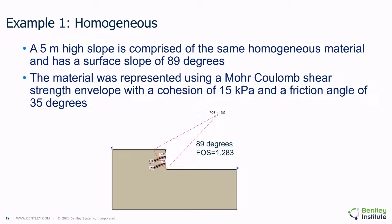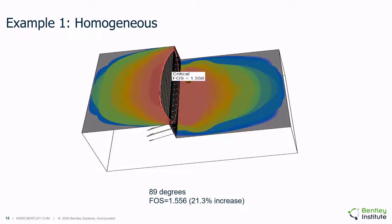This example is a homogeneous slope of 5 meters high, analyzed in 2D and 3D. The slope consists of an 89-degree slope and the resulting factor of safety calculated is 1.3. The shear strength of the material is a cohesion of 15 kPa and a friction angle of 35 degrees. If we extend the 89-degree slope out into 3D, we notice that the factor of safety raises to 1.6, which is a 21% increase over the 2D factor of safety. In the 3D analysis, the true shear strength representation is denoted in the wings of the ellipsoid and the true interaction with each 3D anchor is considered, making 3D a more rigorous analysis.